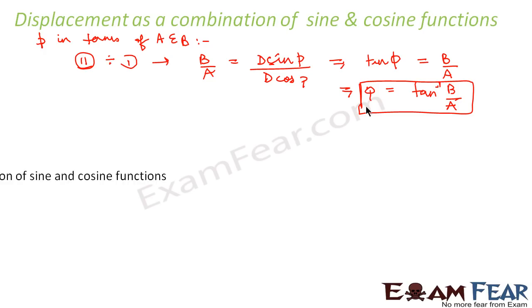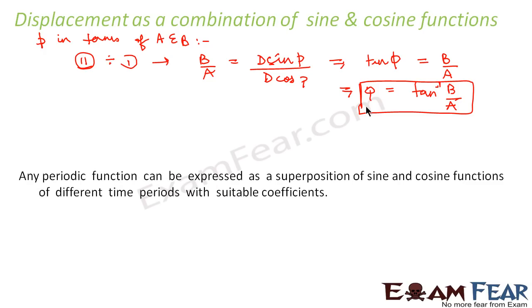So, what do we conclude from this slide? Any periodic function can be expressed as a superposition of sine and cosine functions of different time periods with suitable coefficients.